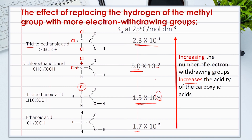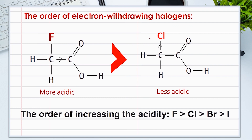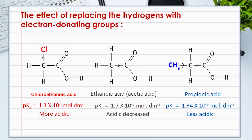The stronger the electron-withdrawing group, the higher the acidity of the carboxylic acid. For example, fluoroethanoic acid is more acidic than chloroethanoic acid. Increasing electronegativity increases the halogen's electron-withdrawing ability, resulting in increased acidity. The order of acidity for halogen-substituted carboxylic acids follows: fluorine > chlorine > bromine > iodine. Increasing the number of electron-withdrawing groups also increases acidity because it weakens the O–H bond, making it easier to lose a proton and increasing the stability of the formed carboxylate ion. That is why we see an increase in Ka values.